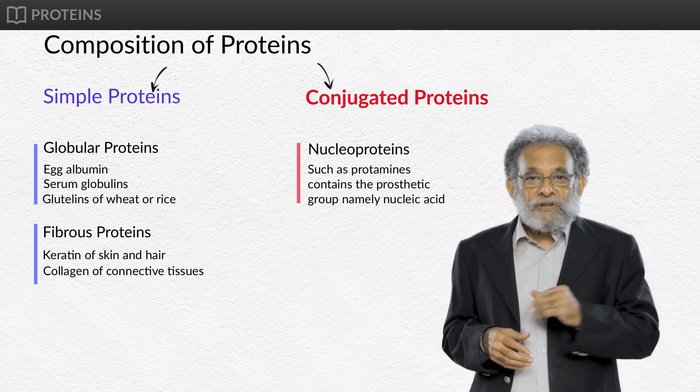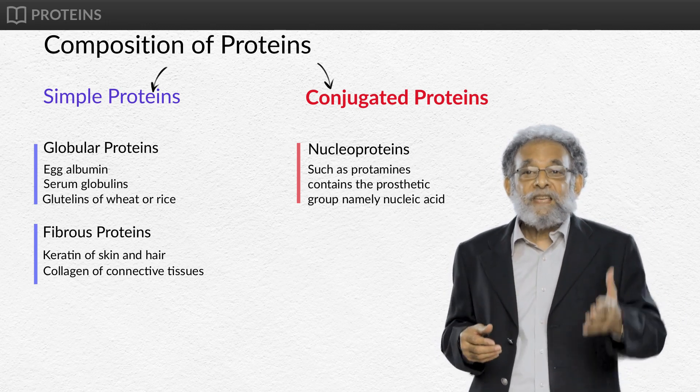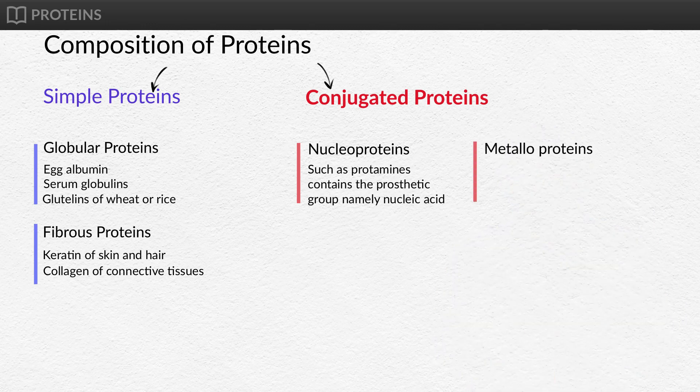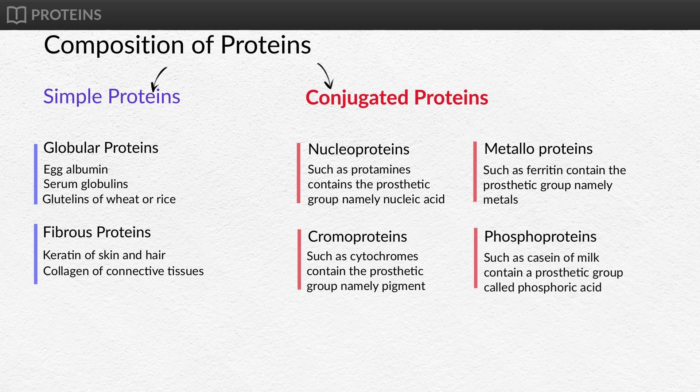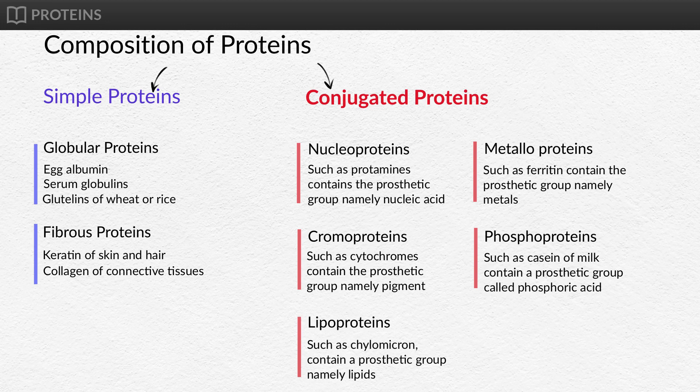Nucleoproteins such as protamines contain the prosthetic group, namely nucleic acid. Metalloproteins such as ferritin contain the prosthetic group, namely metals. Chromoproteins such as cytochromes contain the prosthetic group, namely pigment. Phosphoproteins such as casein of milk contain a prosthetic group, namely phosphoric acid. Lipoproteins such as chylomicron contain a prosthetic group, namely lipids. Glycoproteins such as mucine contain a prosthetic group, namely carbohydrates.